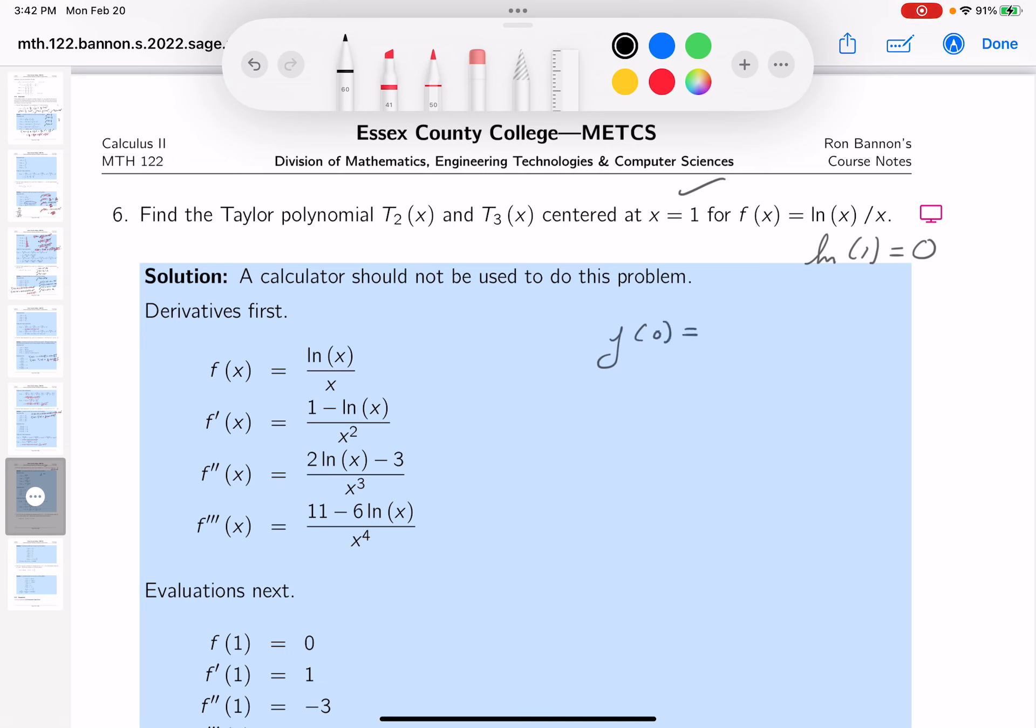is going to be 0 divided by 1, which is 0. f prime, I made a mistake. I just noticed it.